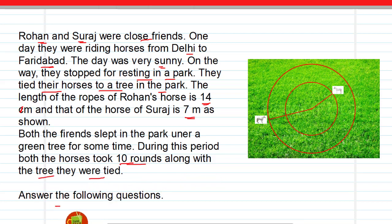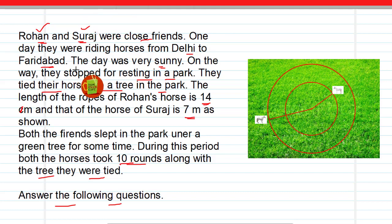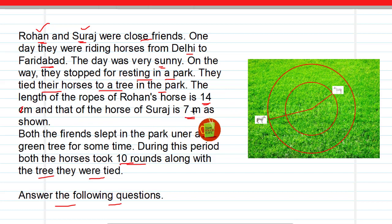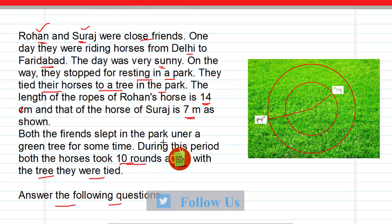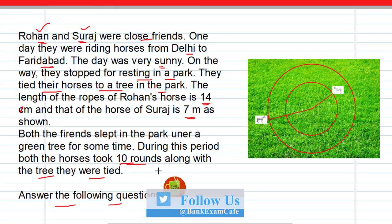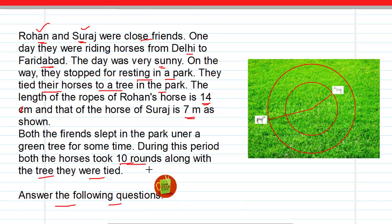Answer the following questions. So, Rohan and Suraj were close friends riding from Delhi to Faridabad. Since it was a sunny day, they decided to take rest in a park and tied their horses to a tree. The rope of Rohan's horse was 14 meters and that of Suraj's horse was 7 meters. Both friends slept under the tree for some time, and during that period both horses took 10 rounds around the tree.